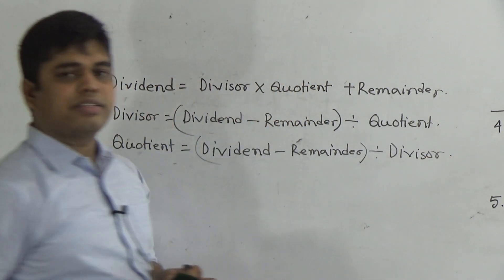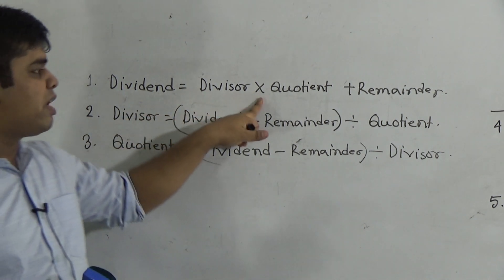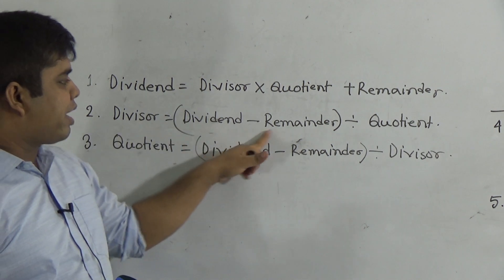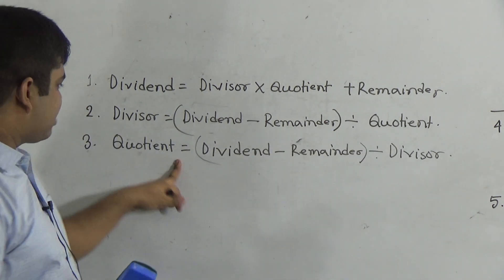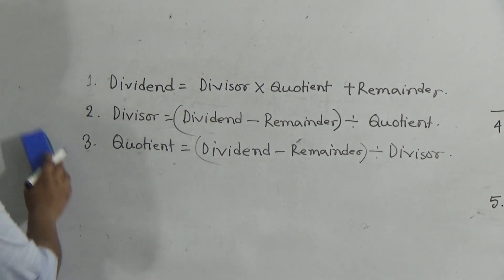Another formula is divisor equal to dividend minus remainder divided by quotient. And another formula is quotient equal to dividend minus remainder divided by divisor. Dear students, this is enough for class 4. You must memorize these three formulas. Now I erase this.